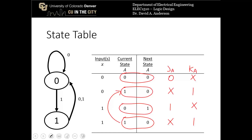We don't really need K-maps to figure out the expressions for J and K in this simple example. We can simply say J_A equals X, and K_A equals 1.